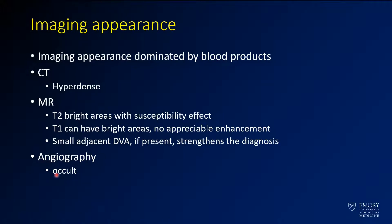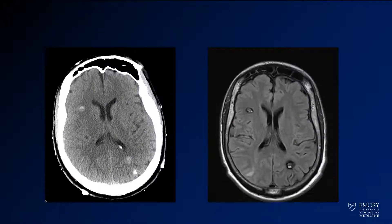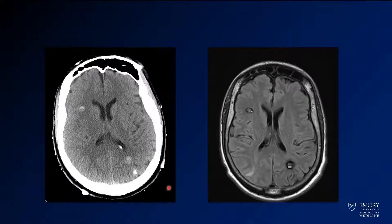On angiography, these are classically occult, so you typically don't see anything there. Reviewing the images again — even the ones without acute hemorrhage are hyperintense on CT. You can also see a little bit of calcification related to prior hemorrhage.